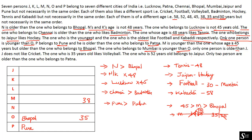The next clue: only one person is older than J. So only one person has an age greater than J's. That means J's age must be 52 years — since only 58 would be older than 52. So J is 52 years old. Additionally, J does not like cricket.